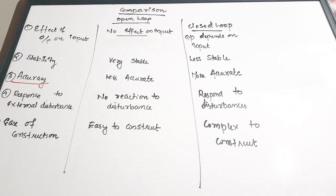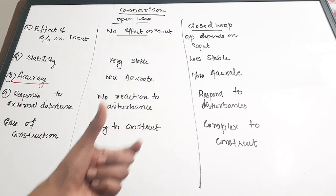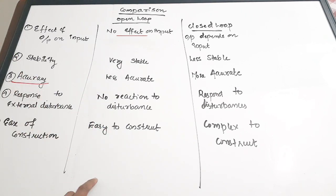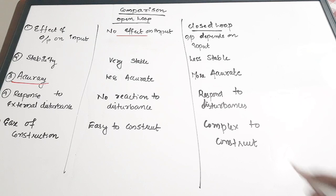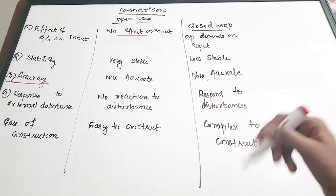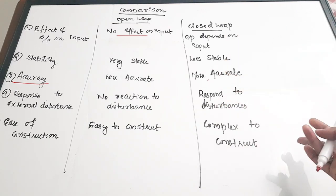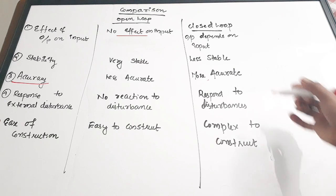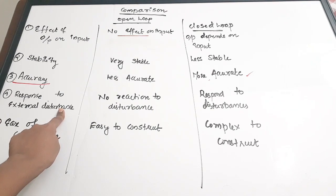The third point is accuracy. Open loop control systems are less accurate because when variations occur in the output, since there is no feedback path, the variations may affect the system and results may not be accurate. Closed loop control systems are more accurate because variations are measured by a measurement device, fed back to the input, and the controller adjusts the process to produce a more accurate result.